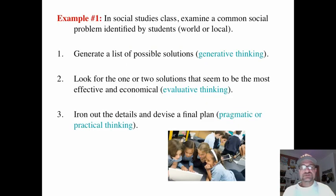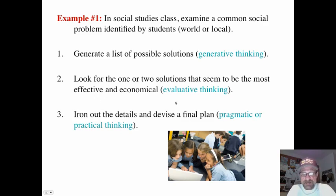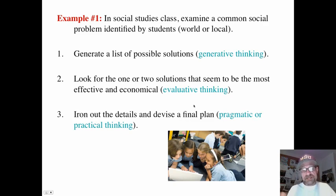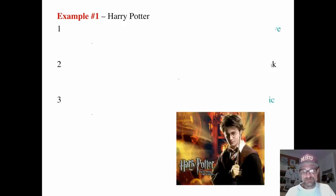Examples. In a social studies class, examine a common social problem. Have students generate a list of possible solutions — that's generative thinking. Look for one or two solutions that seem the most effective and economical — evaluative thinking. Then iron out the details and devise a final plan — pragmatic or practical thinking. Three types of thinking to examine one area.